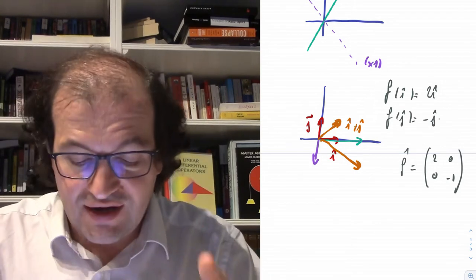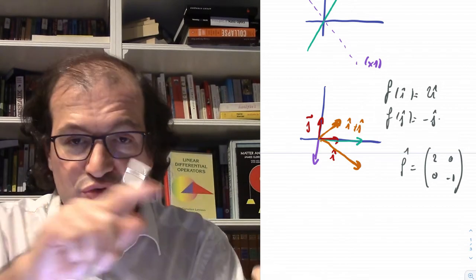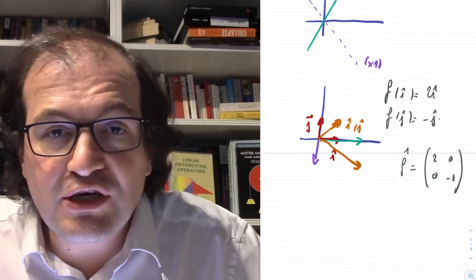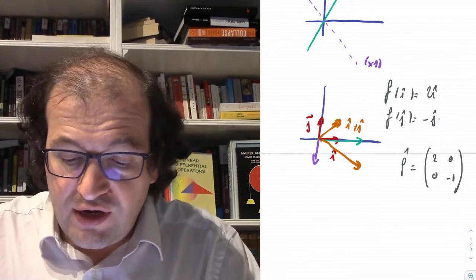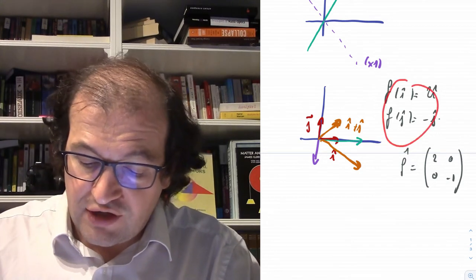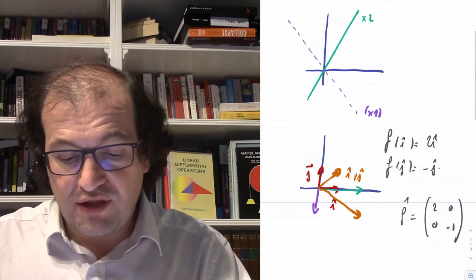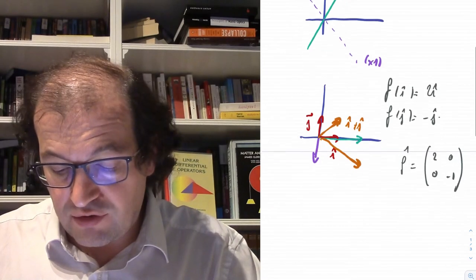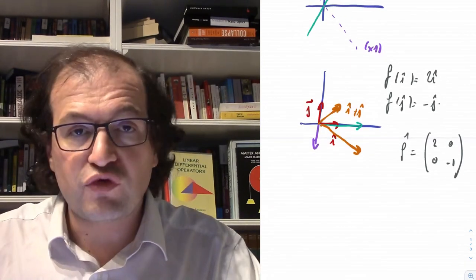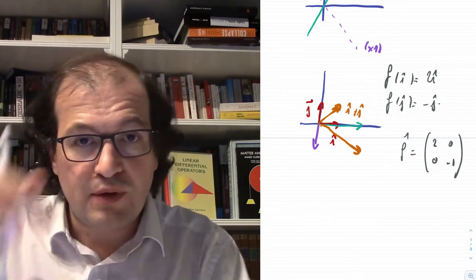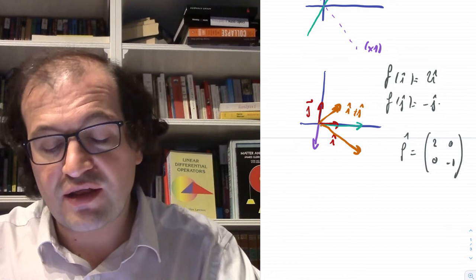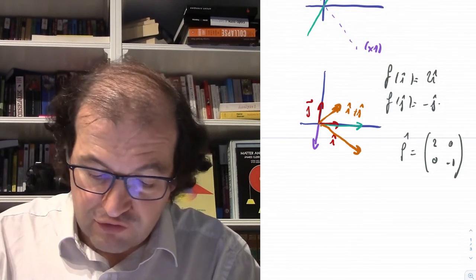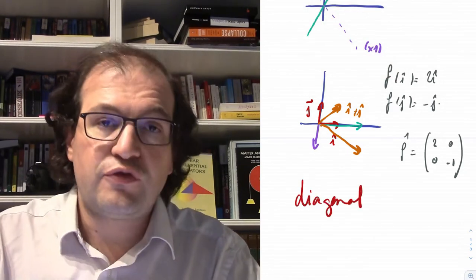If we can decompose our linear function into one-dimensional components, it becomes very simple again. Matrix products, compositions, and inverses are all very easy for functions of this diagonal type. Functions of this type we call diagonal functions or diagonal matrices.